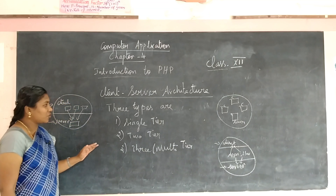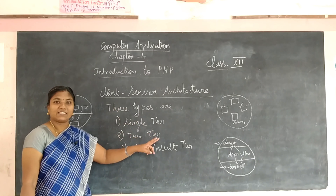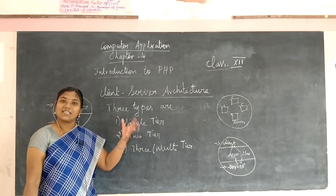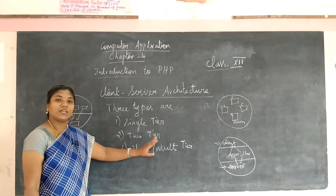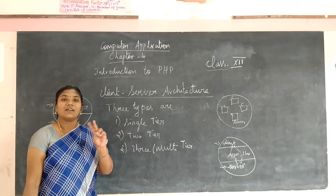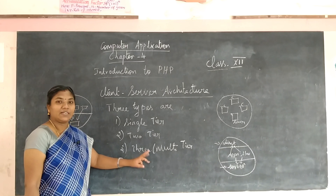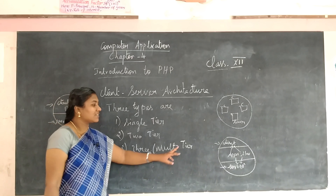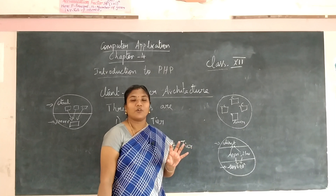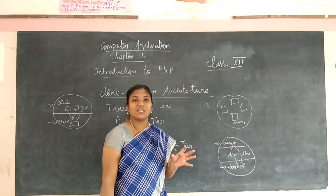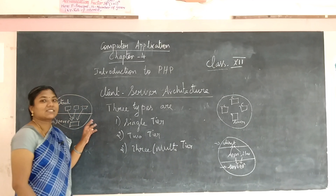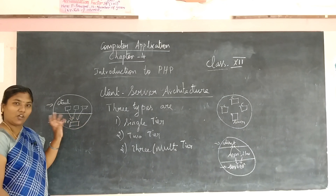So these are all the three types of client-server architectures: single-tier architecture, two-tier architecture with client level and server level, and three-tier or multi-tier architecture where the number of levels depends upon the business logic and the type of software they are using.